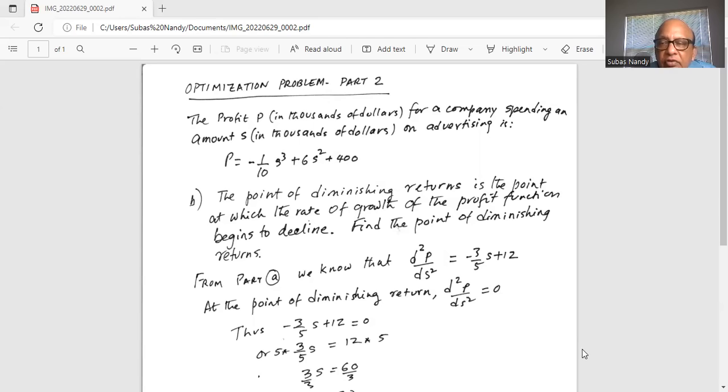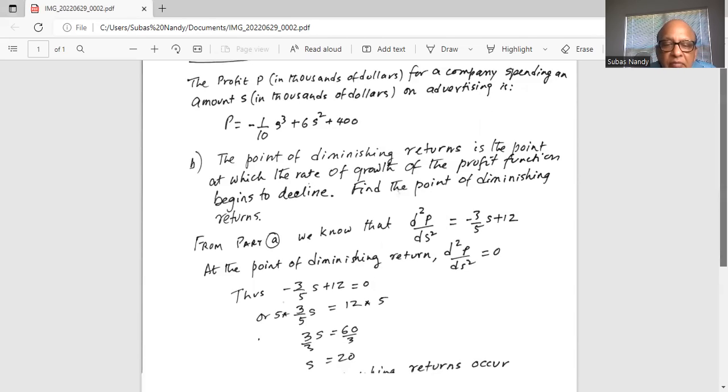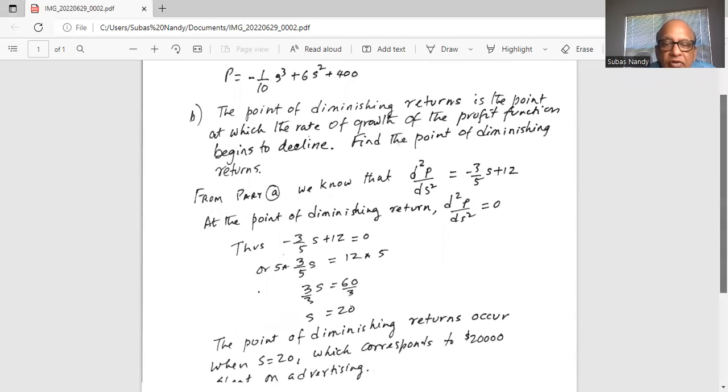Multiplying by five on both sides, 3S = 60. Dividing by three on both sides, S = 20.